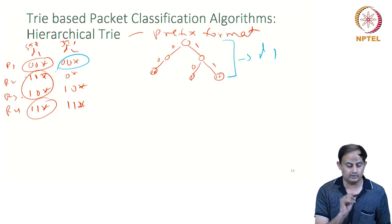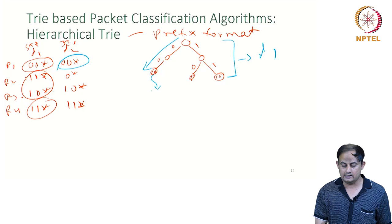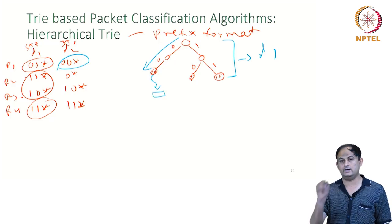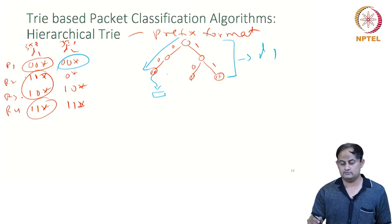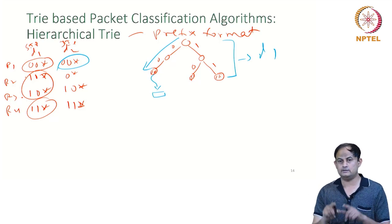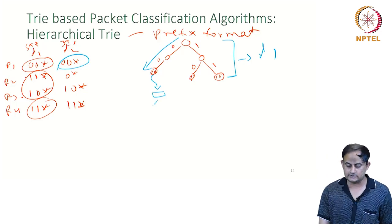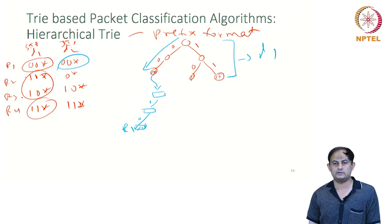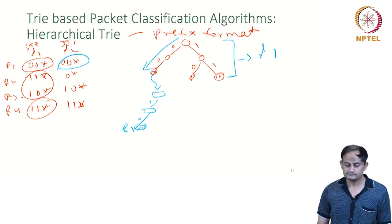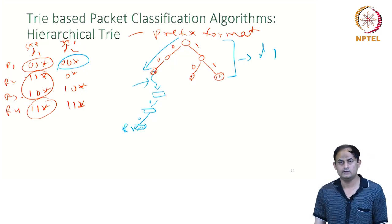For all possible prefix combinations of the first dimension, the job is done. Now I construct a second-level trie for dimension D2. The first dimension trie uses circular nodes; the second dimension uses rectangular nodes. For 00* in R1, I add a no-cost dummy link from that node to the root of the second-dimension binary trie. Following another 00*, this node represents rule R1 in the classifier. This no-cost link means you are not reading anything from the header.